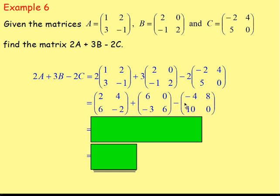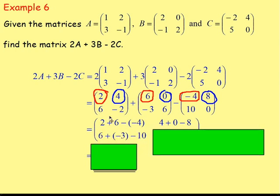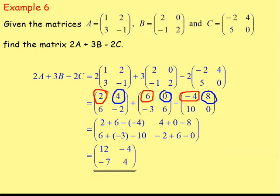In order to work that out, we take the first entries from left to right — adding the matrices and subtracting 2C. First row, first column: 2 add 6, take away negative 4. First row, second column: 4 add 0, take away 8. Second row: 6 add negative 3, take away 10. And for second row, second column: negative 2 add 6, take away 0. That gives us 12, negative 4 for the top row, and negative 7, 4 for the bottom row. Fantastic.